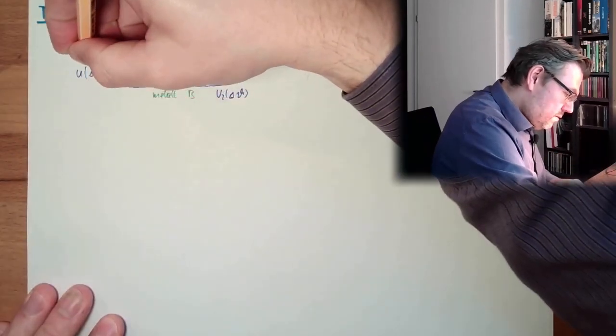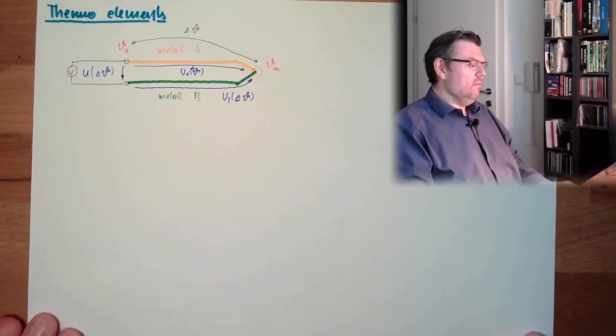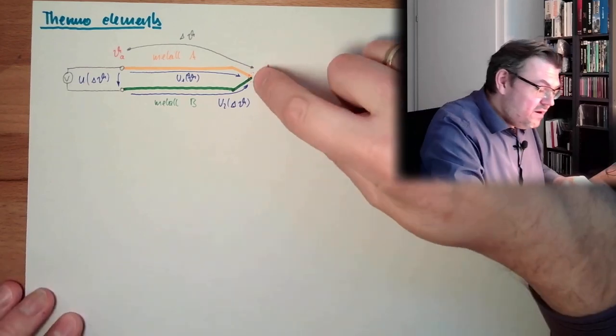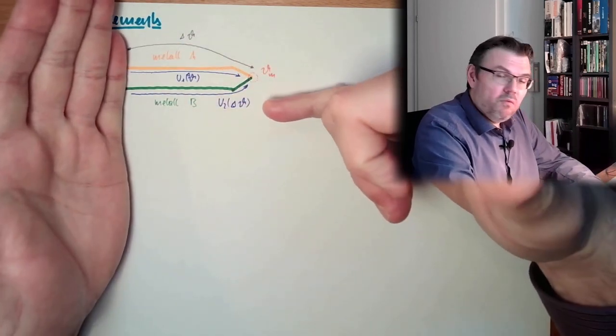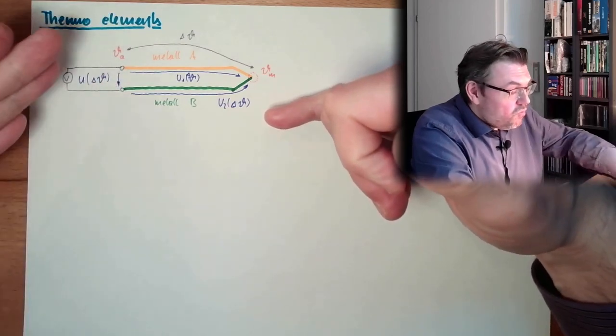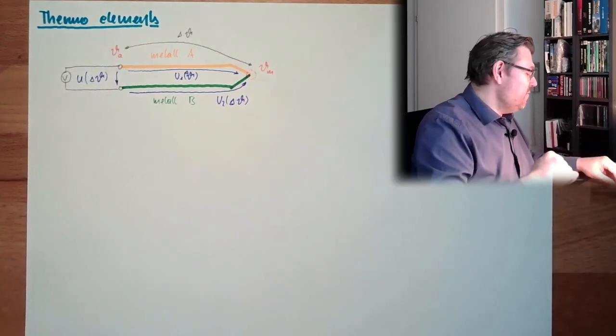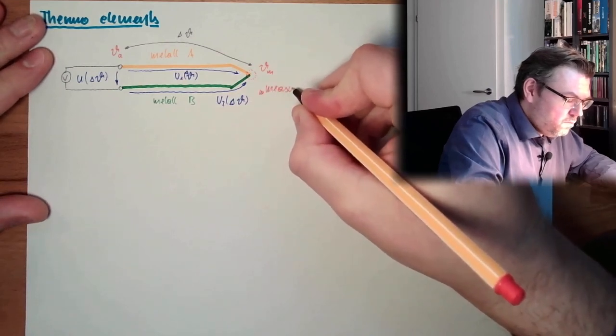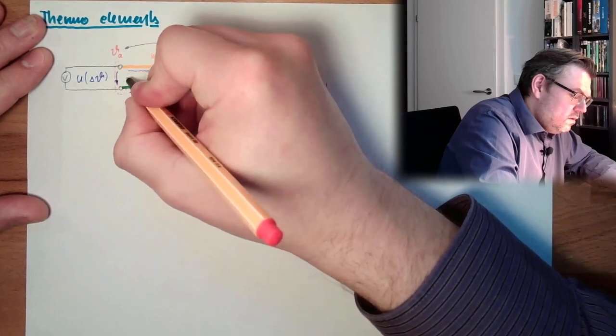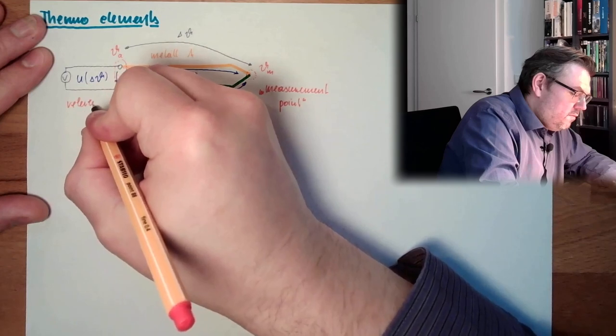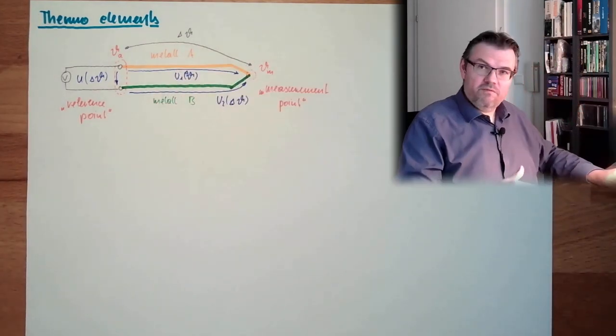So here we have our measurement device. And this is how a thermo-element is working. I have here some temperature, I have here some smaller temperature, both metals build up a thermo-voltage. The difference of the thermo-voltage is directly connected to the temperature difference between those two points. This here is called the measurement point, and this here is called the reference point.